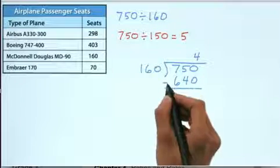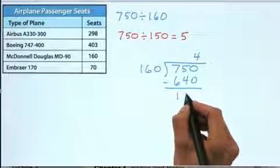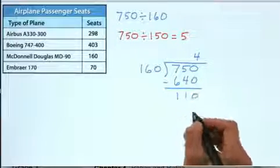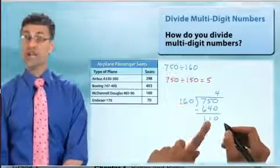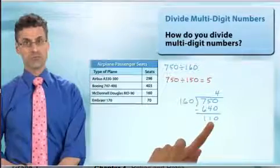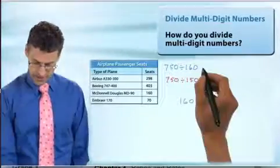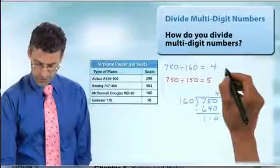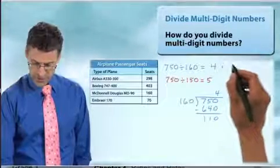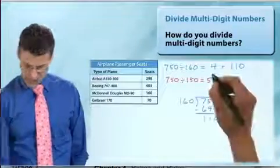And now remember the rule is to subtract. And if we subtract, we see 110, which notice is smaller than 160, which is good. And actually, that is the remainder. And so what we see is the answer here is we get a quotient of four with a remainder of 110. So that's the answer.